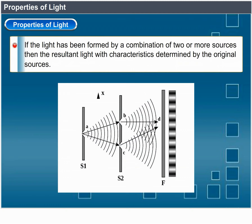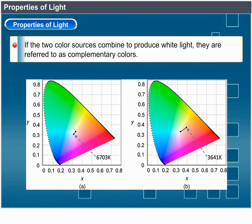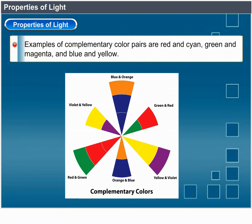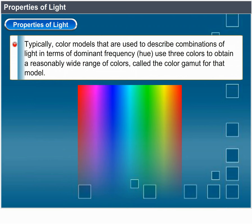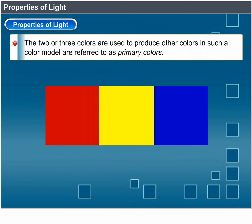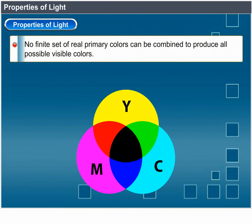When we view light formed by a combination of two or more sources, we see a resultant light with characteristics determined by the original sources. Two different color light sources with suitably chosen intensities can produce a range of other colors. If the two color sources combine to produce white light, they are referred to as complementary colors. Examples of complementary color pairs are red and cyan, green and magenta, and blue and yellow. Color models typically use three colors to obtain a reasonably wide range called the color gamut. The two or three colors used to produce other colors in such a model are referred to as primary colors.